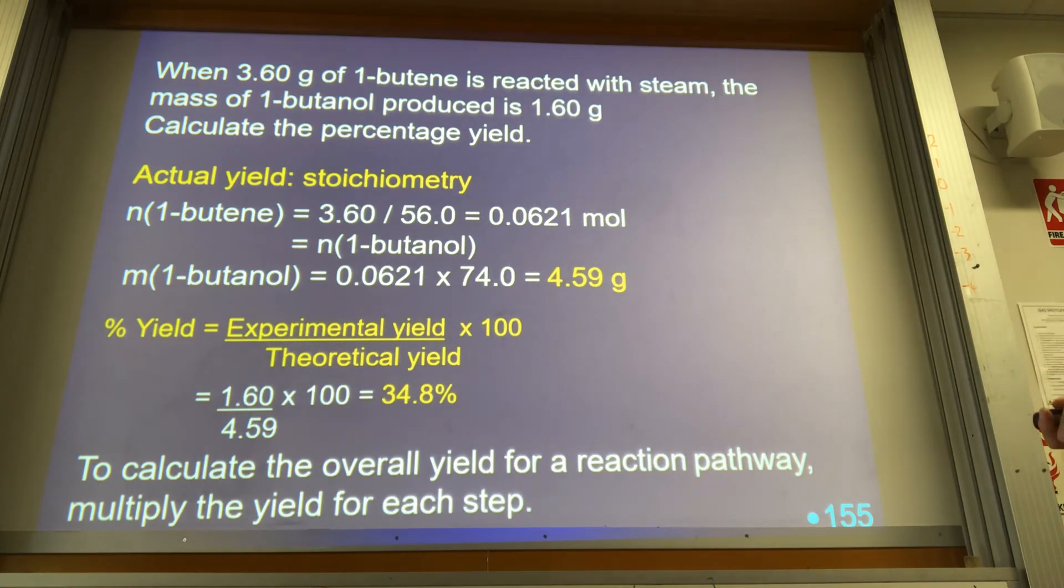So I didn't even write an equation for this. You'll know that's because we've got 1 to 1 mole ratios all the way through. The number of moles of butanol that we get is going to be the same as the number of moles of butene. So first of all, we work out the number of moles of butene: 3.6 divided by the molar mass 56, which gets 0.0621. And because it's that 1 to 1 mole ratio, that's going to be the same as the number of moles of 1-butanol. We then work out the mass of 1-butanol, multiplied by its molar mass, and what do we see? 4.59 grams. So that's what we should have got if all of the butene reacted to form 1-butanol. However, we only got 1.6 grams. That gives us less than 35 percent yield.